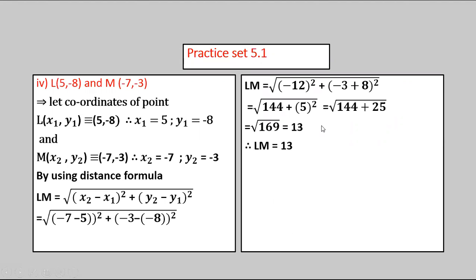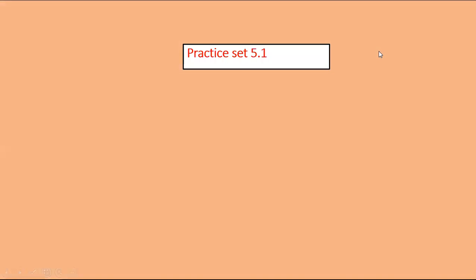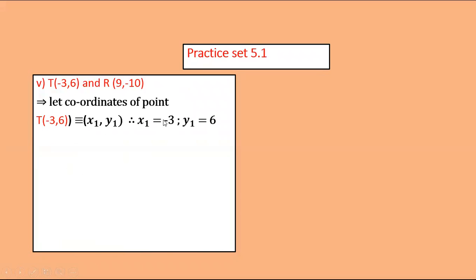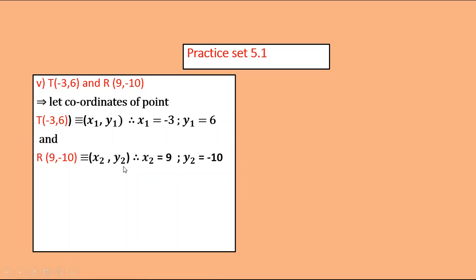The distance between points L and M is 13. Next, the coordinate of point T is (−3, 6) and coordinate of point R is (9, −10). Let T be x1, y1, so x1 = −3, y1 = 6. Let R be x2, y2, so x2 = 9, y2 = −10. By using the distance formula, TR = √[(x2−x1)² + (y2−y1)²].